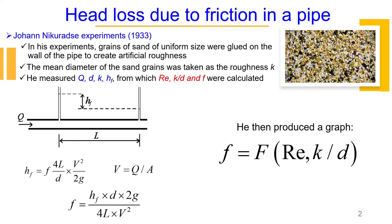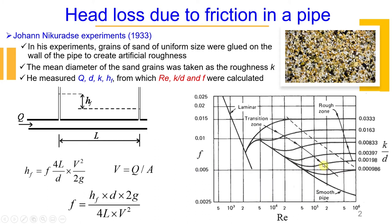Then he could produce a graph where friction factor was plotted as function of two parameters: Reynolds number and relative roughness. And this graph looked like this. All axes are shown in logarithmic scale, so friction factor is function of Reynolds and relative roughness. There are important zones on this plot.